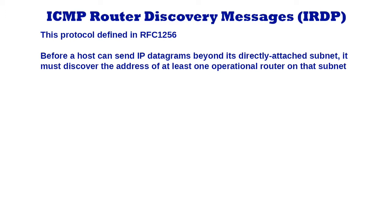Before a host can send IP datagrams beyond its directly attached subnet, it must discover the address of at least one operational router on that subnet. Typically this is accomplished by reading a list of one or more router addresses from a configuration file at startup time. On multicast links, some hosts also discover router addresses by listening to routing protocol traffic.